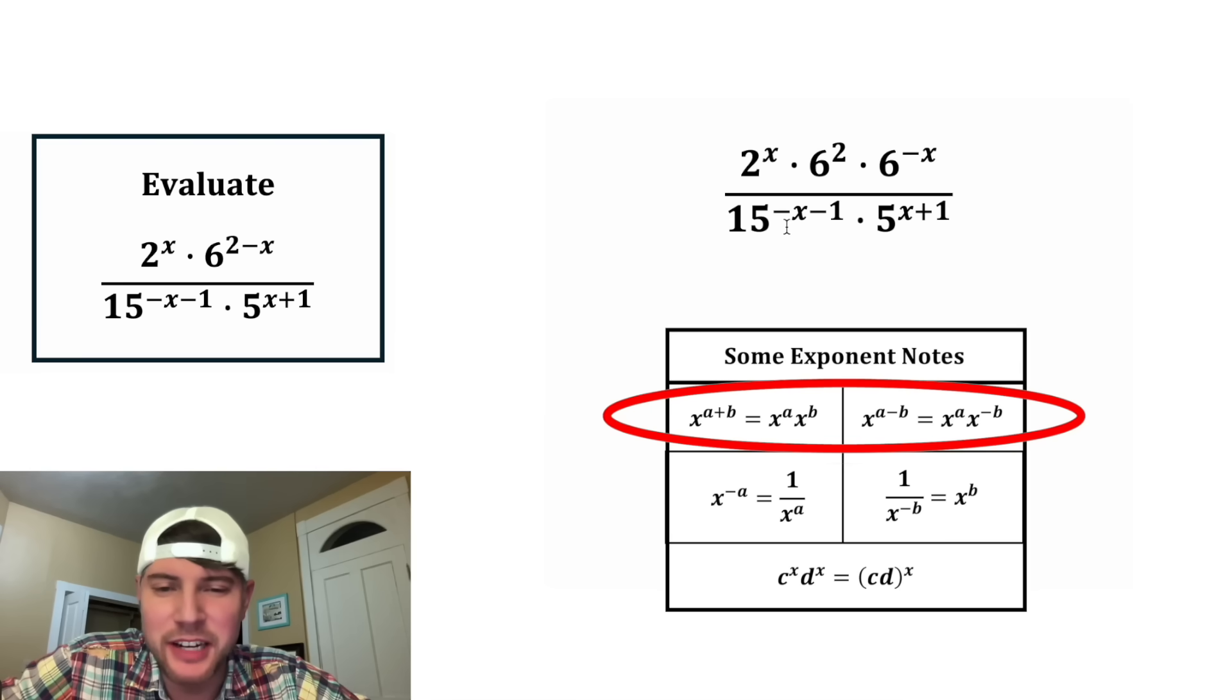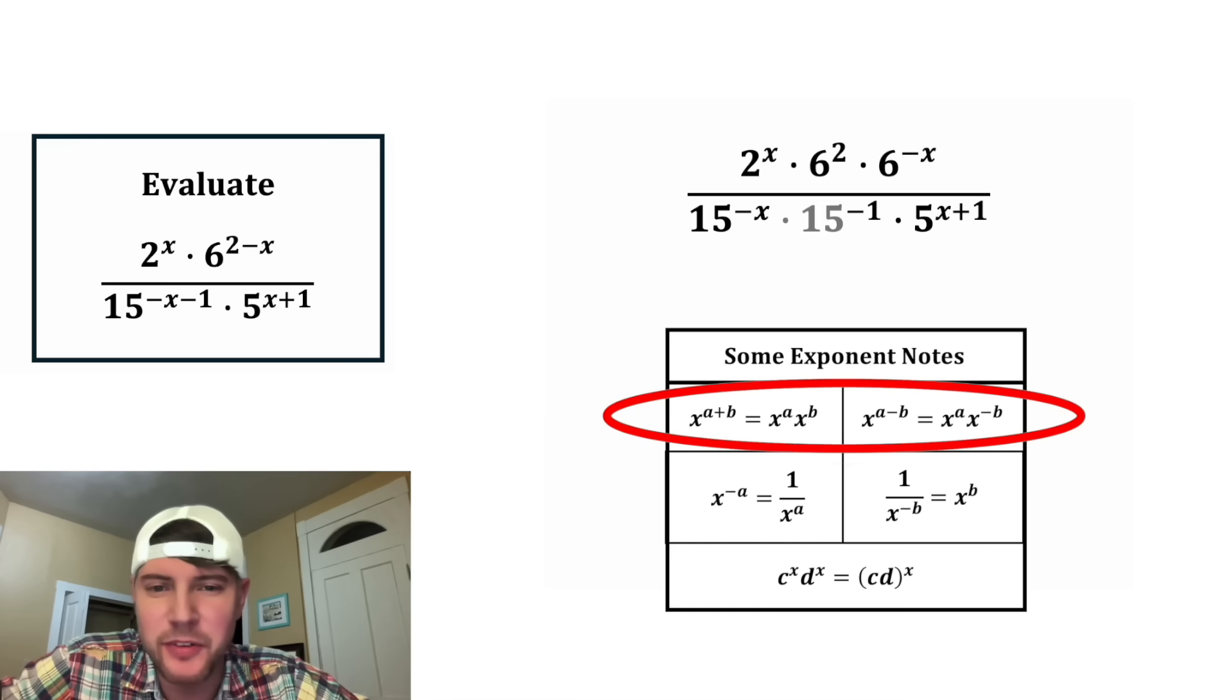And for the 15 to the negative x minus 1, we can rewrite that as 15 to the negative x times 15 to the negative 1. And for the 5 to the power of x plus 1, we can rewrite that as 5 to the x times 5 to the 1.